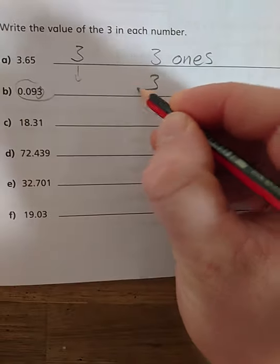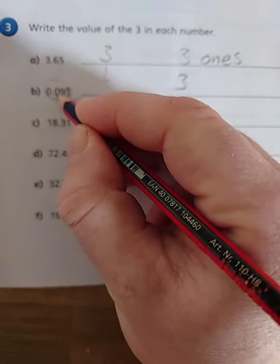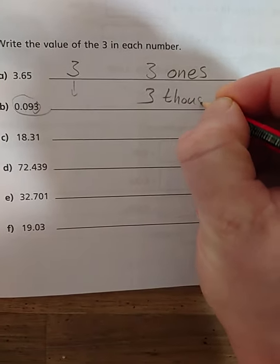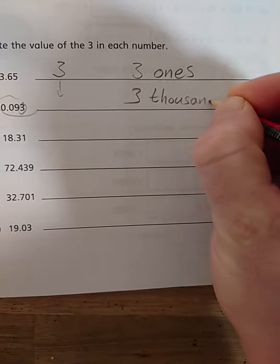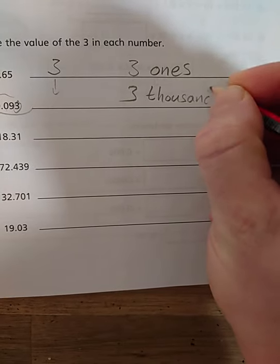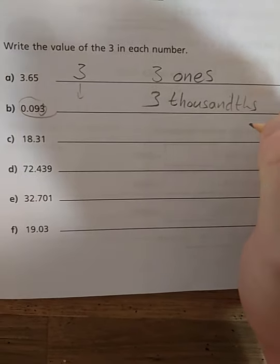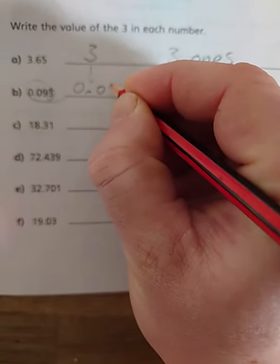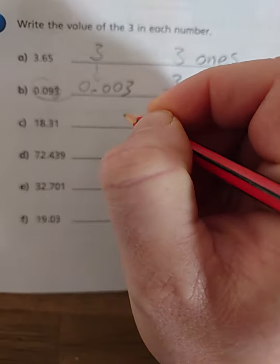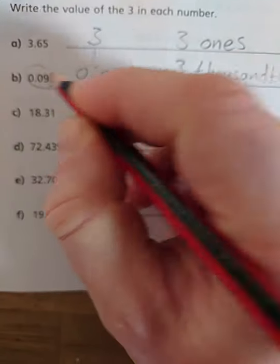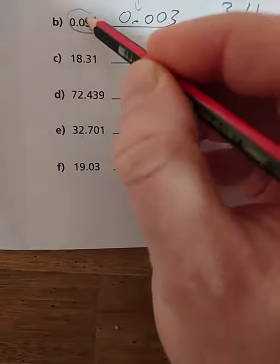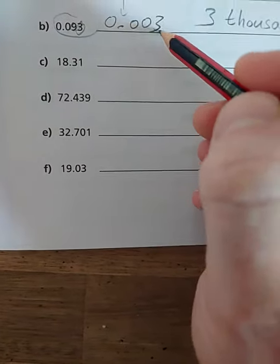But just be careful with these ones if you're writing the number out. Just be careful with what you write. In fact, I'll show you how to do this one. This one here, well it's three tenths, hundredths, thousandths. I think that's right. It's going to be 0.003. That's how much it's worth. 0.003 because we're only interested in the three. Even though there's a nine there, we're only interested in the value of the three. Hopefully that makes sense.